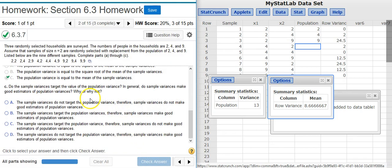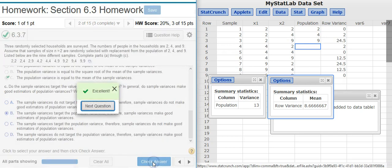Part C asks us a similar question but in a different way. Do the sample variances target the value of the population variance? And again you want to not just look at these numbers here because your sample size for purposes of these problems is going to be pretty small. So you want to not look at the numbers so much as you want to have that list of biased and unbiased estimators memorized. Variance is an unbiased estimator, so it's going to target the population, and therefore it makes a good estimator. So this is the answer option that best reflects that. Excellent.